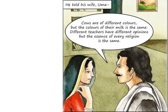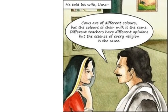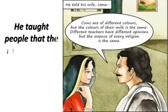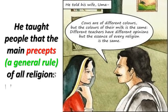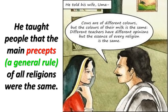This is a scene when Raja Ram Mohan Roy was talking with his wife Uma. He told her: 'Cows are of different colors but the color of their milk is the same. Different teachers have different opinions but the essence of every religion is the same.' He taught people that the main precepts of all religions were the same — meaning we are all equal.